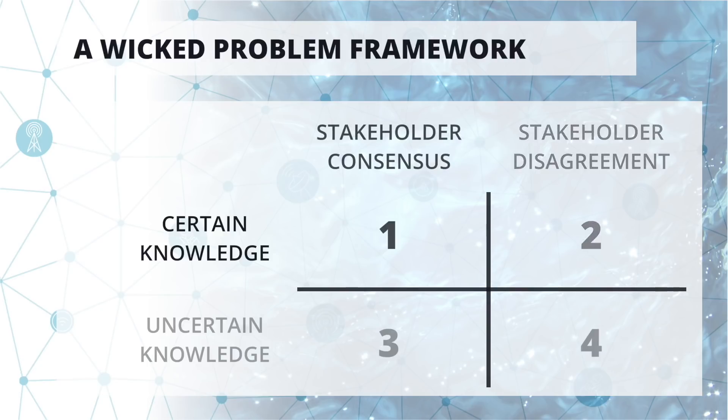And then in the first quadrant, we see that all is well. We are agreeing with each other on what to do. We have all the information, models, and plans, and the only thing we need to decide is how and where to spend our money, so to speak.